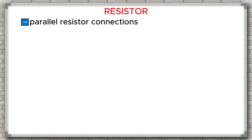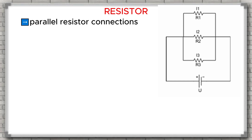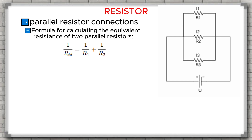Let's continue and learn about parallel resistor connections. A parallel connection means the resistors are connected in such a way that both ends of each resistor are connected to the same two points in the circuit. This means the voltage across each resistor is always the same. The current will split, flowing through each resistor depending on its value. Key characteristic: the equivalent resistance, denoted as Req, is always smaller than the smallest resistor in the group. The formula for two parallel resistors is: 1 divided by Req equals 1 divided by R1 plus 1 divided by R2.